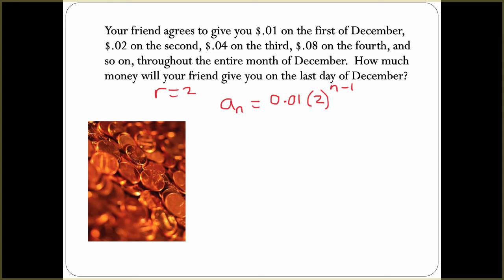We want to see what we're going to get paid on the last day. The last day is the 31st. So our 31st number in the sequence is 0.01 times 2 to the (31 - 1).